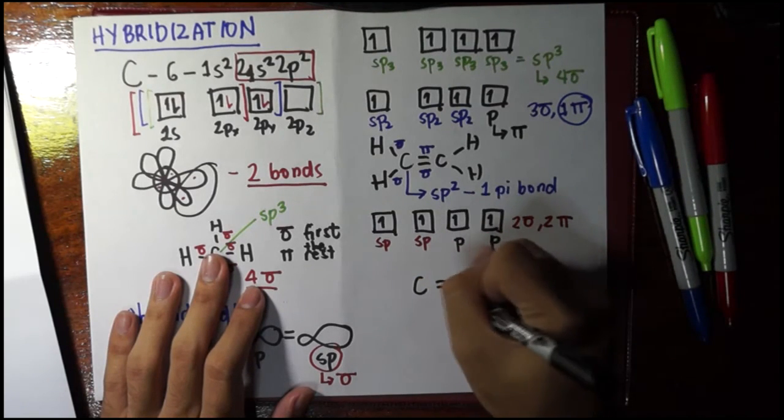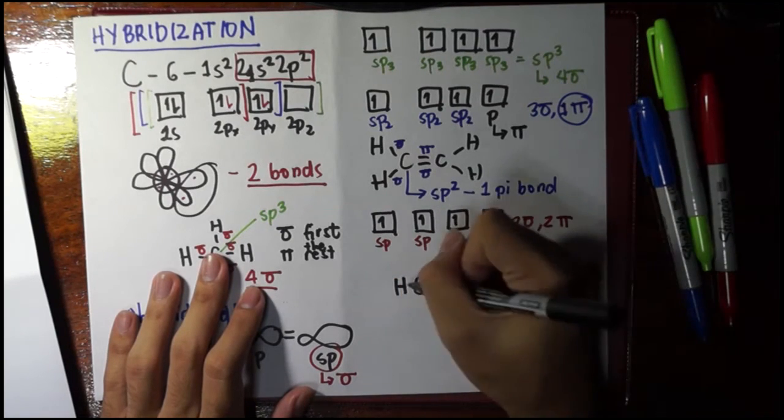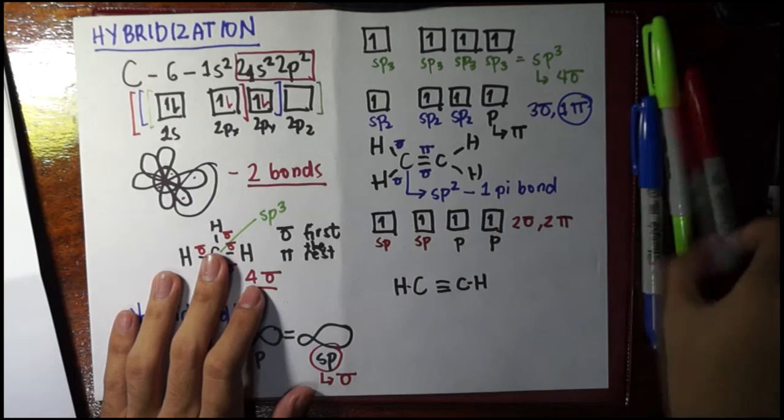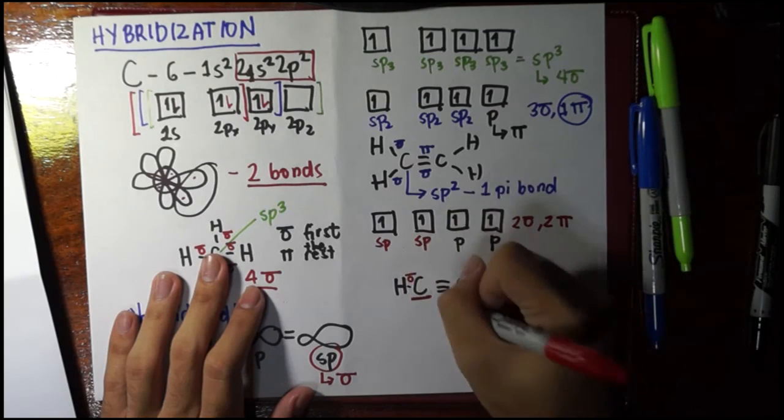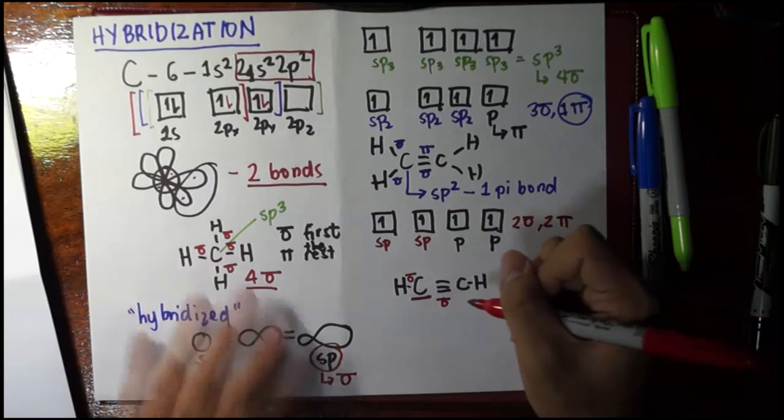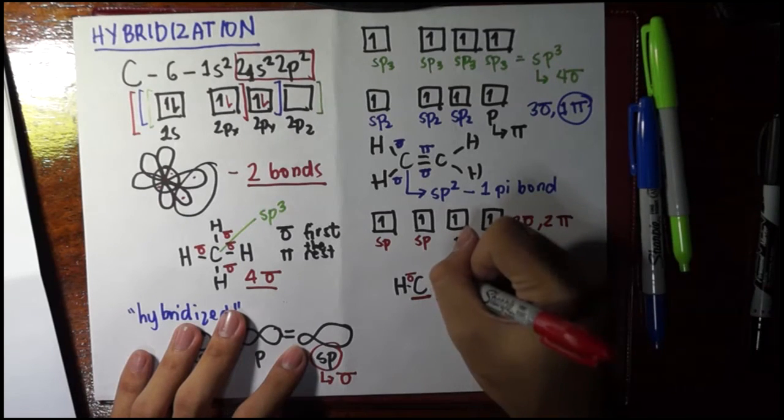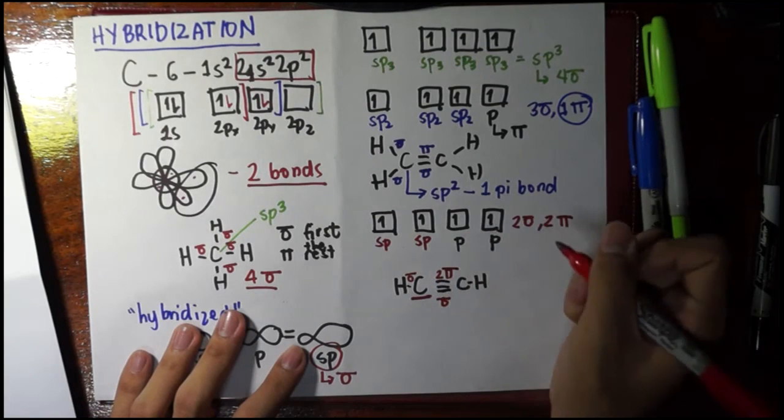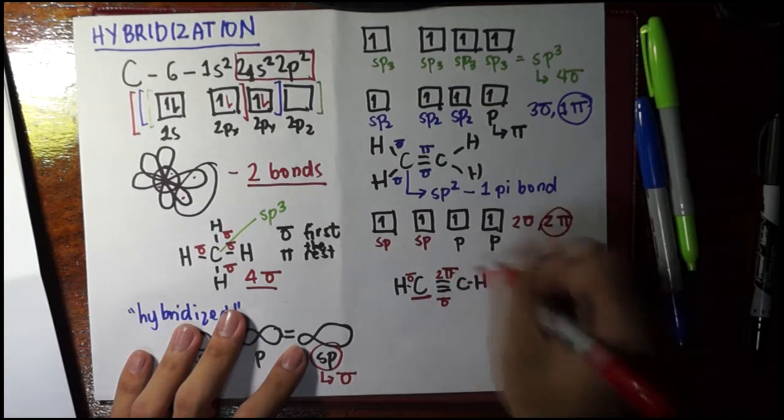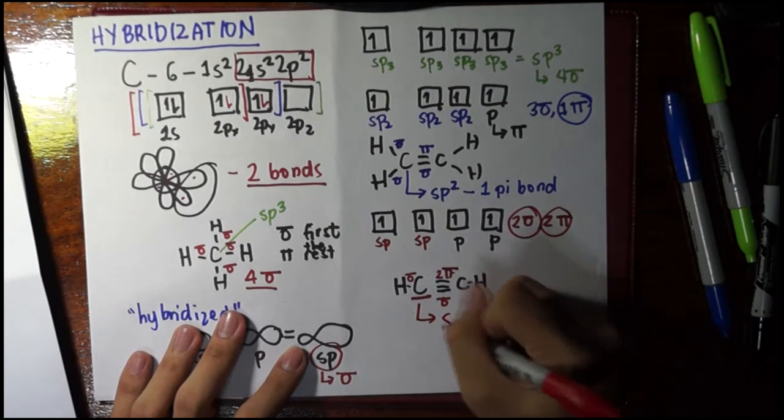For example, we have ethyne, or the trivial name acetylene. Look at this. Let's just draw this bond here. Here, we have a sigma bond for this. Let's look at this carbon. One sigma bond, one sigma bond, and as I said, the rest of the bonds between two atoms, after the first, would be pi. So, here we have two pi, because this one is sigma, let's say. Then, the other two should be pi. And, here, we have two pi, yes, check, and two sigma, check.